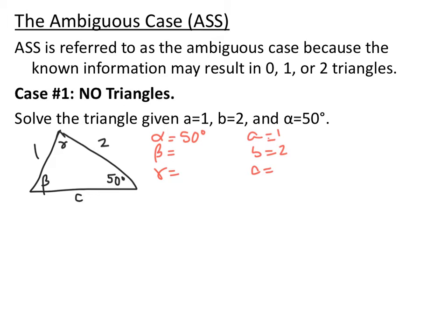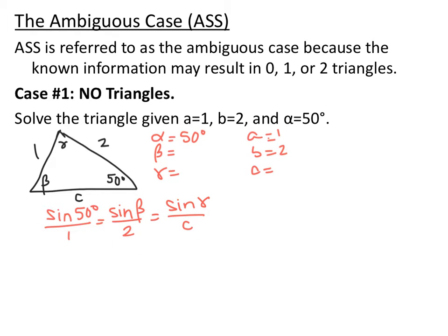I've written out the given information, and now we need to find the missing pieces. Unlike other law of sines problems where you could immediately find the missing angle, we're only given one angle instead of two. So I'm going to go straight to setting up my law of sines ratios: sine of 50 degrees over 1 equals sine of beta over 2, which equals sine of gamma over c.